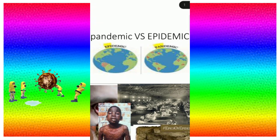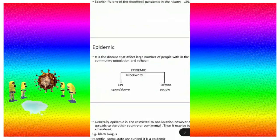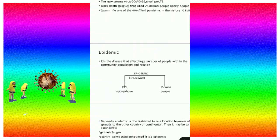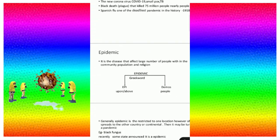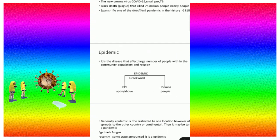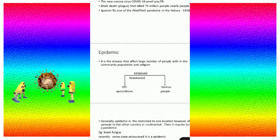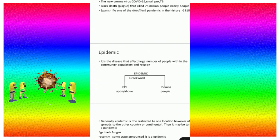What is epidemic? Epidemic is a disease that affects a large number of people within a community, population, and region. When it is limited to a limited population, limited region, or limited area, then we call it epidemic.